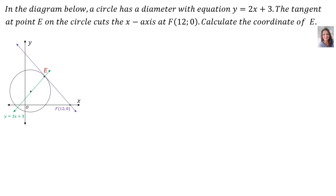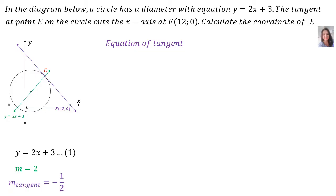What we will do is, if only we knew the equation of the tangent, then we could do simultaneous equations to find the coordinate of E. For the equation of the tangent, the equation y = 2x + 3 is the equation of the diameter, so the gradient of the diameter is 2. If we know the gradient of the diameter, we automatically know the gradient of the tangent will be minus a half, since we have a theorem that says the tangent is perpendicular to the radius.